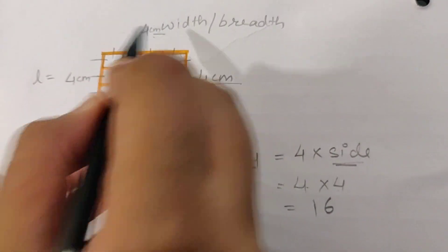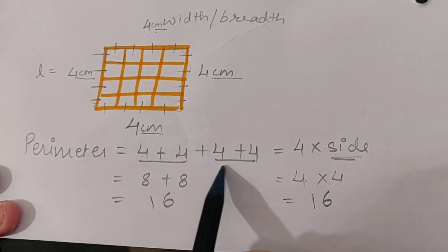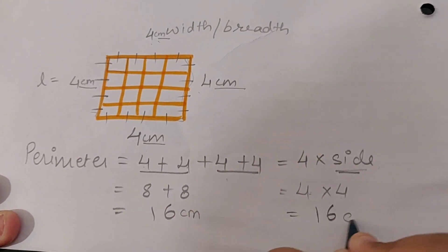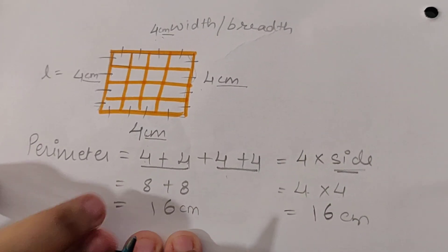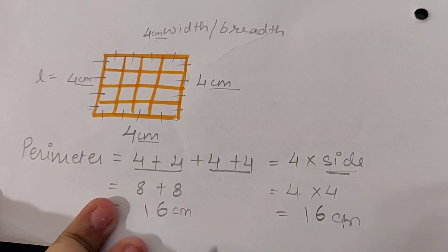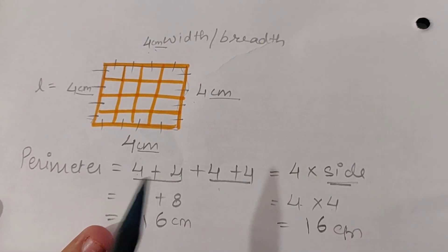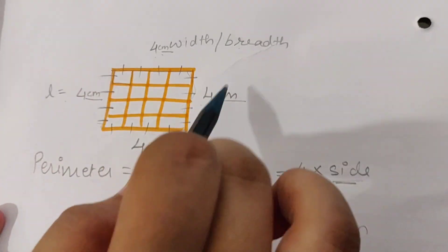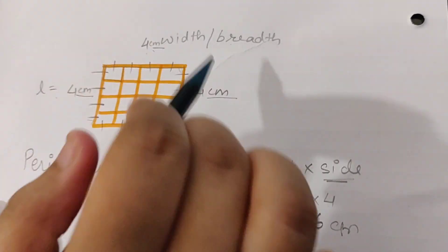We will write here the unit. As we are just adding, the unit we will write is cm. We are not going to use cm². We are not multiplying both length and breadth. We are just adding the sides of the shape.